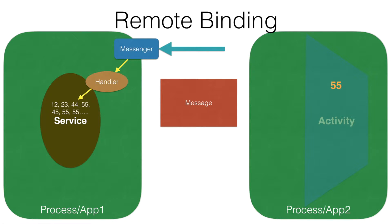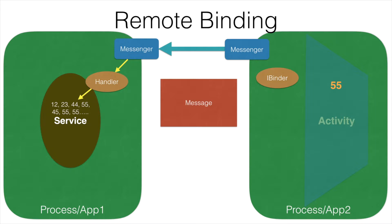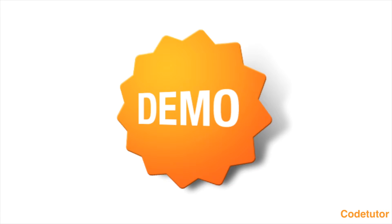For that, we will implement another messenger. This messenger will be initialized with an iBinder. In the service, we implemented the onBind method which returns an iBinder from the messenger object. So this iBinder that we are creating in the activity will actually have a reference to the handler we created in the service. In abstract terms, we are setting an address to the message — this is how the application knows where to connect. The activity will connect to the service and the message will be channeled from the iBinder to a messenger, completing the first half of the circuit.